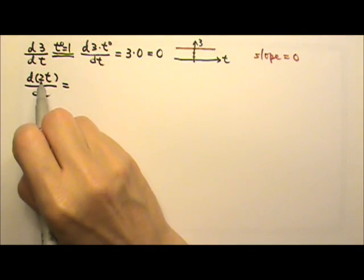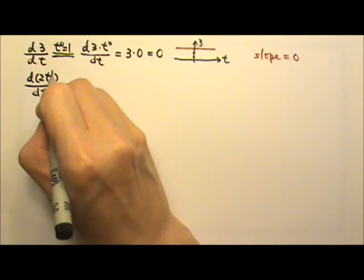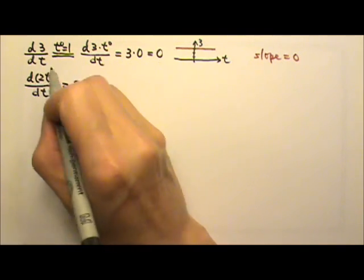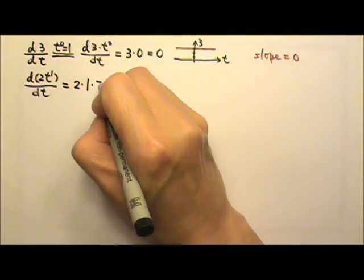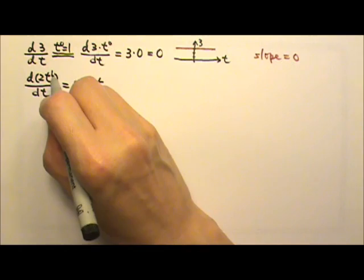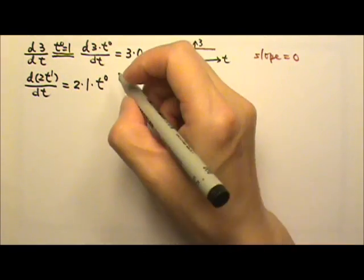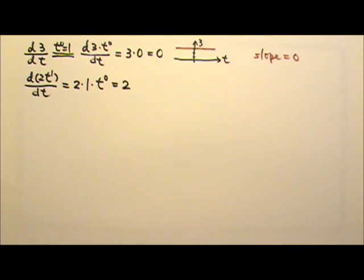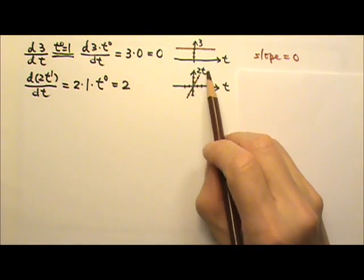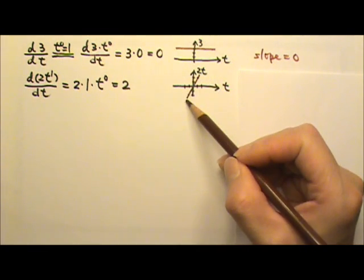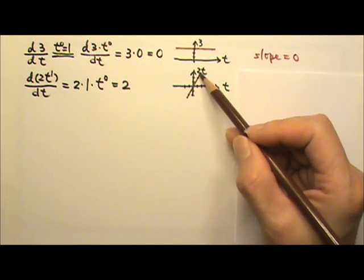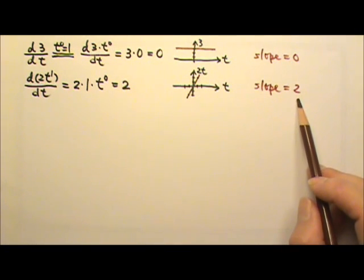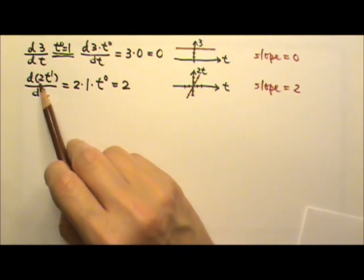For 2t, that's 2 times t to the 1st degree. The coefficient 2 stays, we bring the exponent down, and lose 1 degree of power — so 1 minus 1 — we get 2 times t to the 0th. And t to the 0th is 1, so this equals 2. If I plot 2t as a function of t, I get a straight line, because this is a 1st degree equation. The slope of that graph is 2, which is the same as the derivative of 2t.